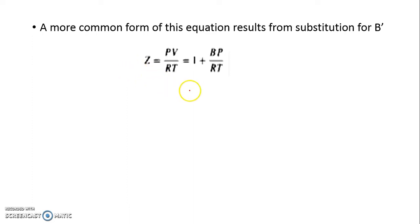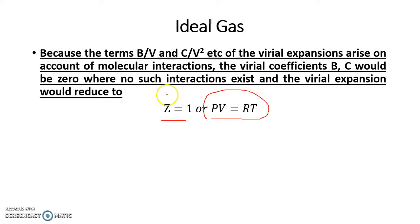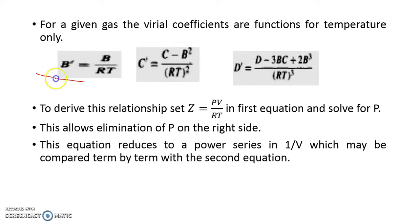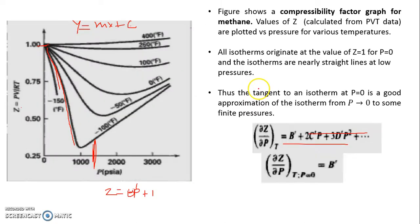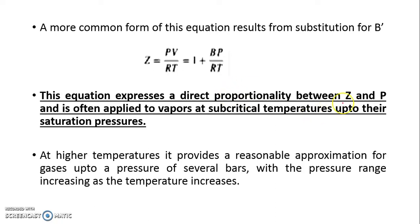A more common form of this equation can be represented like this: z equals 1 plus bp by RT, where I replace b dash with b upon RT, which we have discussed. Z becomes 1 plus bp by RT is a very common expression which can be used up to some pressure, and this pressure can even go to 10 bars. At higher temperatures, naturally this pressure range is more.